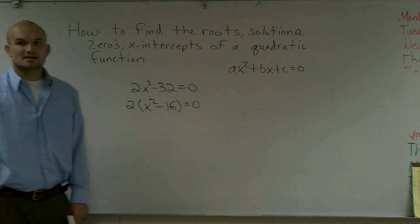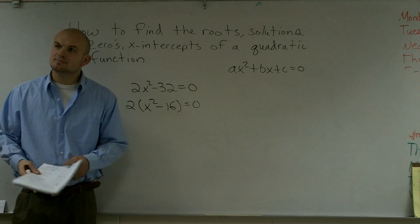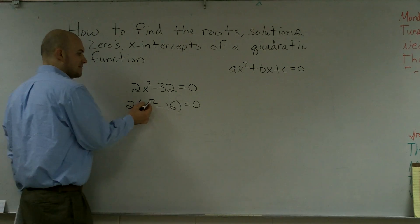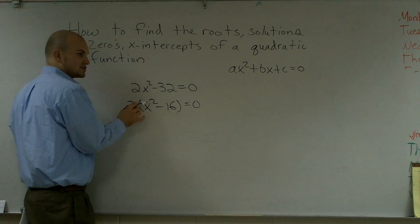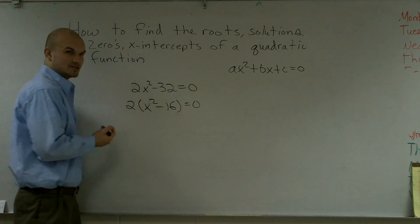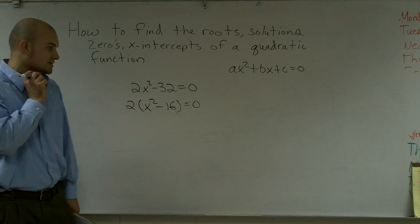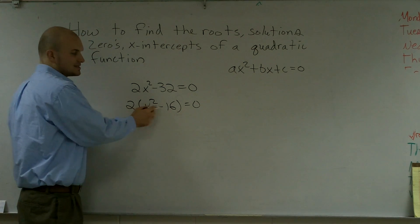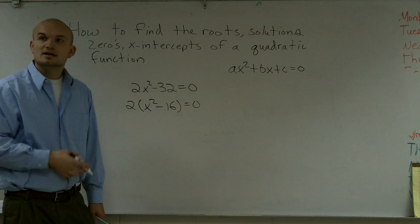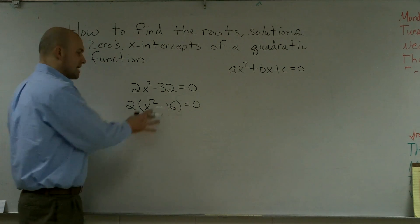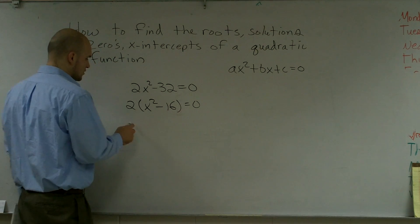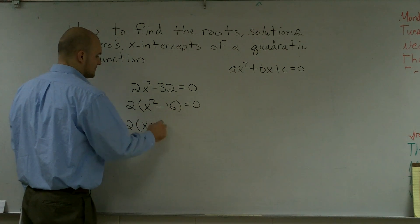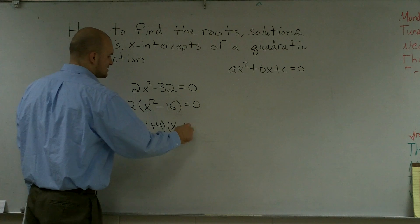The next thing I notice is this is what we call a special factor, because it's a difference of two squares. My first term of the binomial is a square number, and so is my second term. Since these are both square numbers and it's a subtraction — meaning difference — it's the difference of two squares. We can write it as x plus 4 times x minus 4.